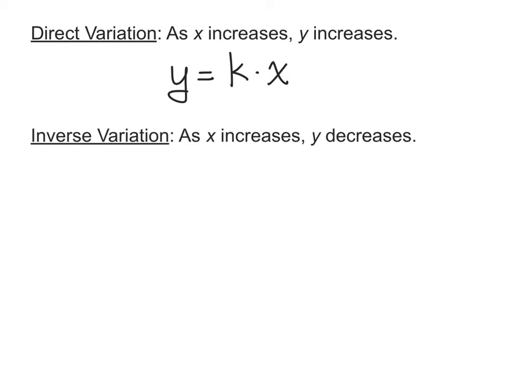Next, there's inverse variation. This is when x and y are going to work in different directions, so as x gets bigger, y is going to get smaller.